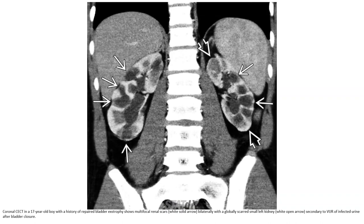Contrast-enhanced CT in a 17-year-old with a history of bladder exstrophy shows multifocal renal scarring with a globally scarred small left kidney, secondary to VUR and infection during and after bladder closure.